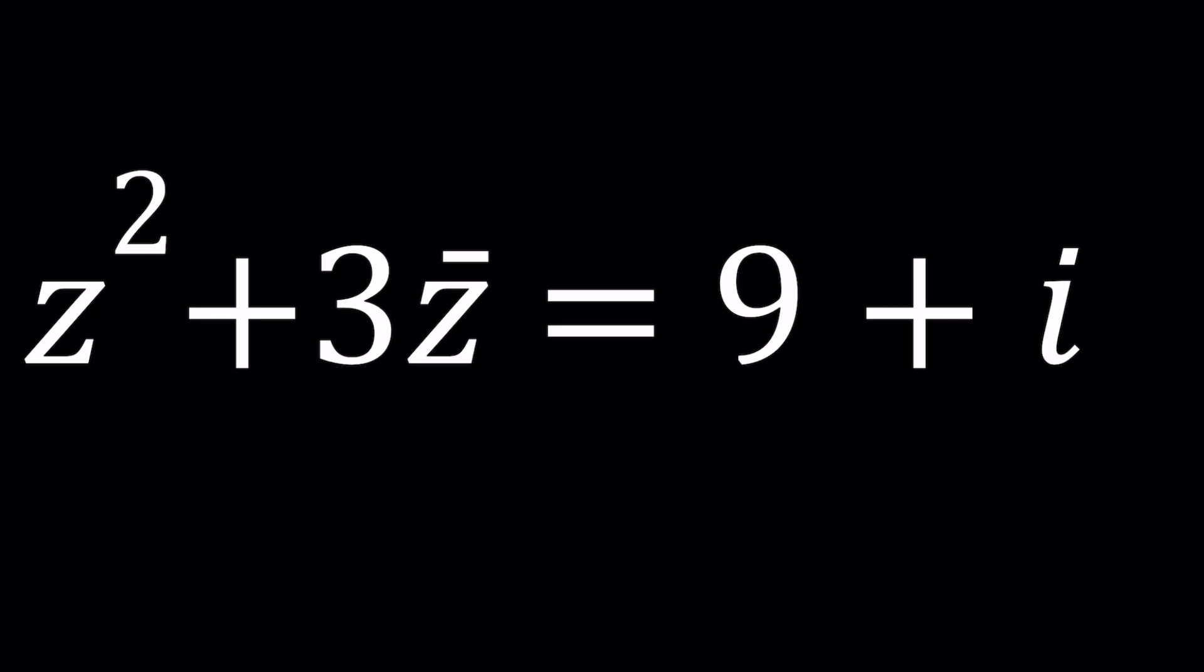So we have Z squared plus 3 Z bar equals 9 plus I and we're going to be solving for Z.